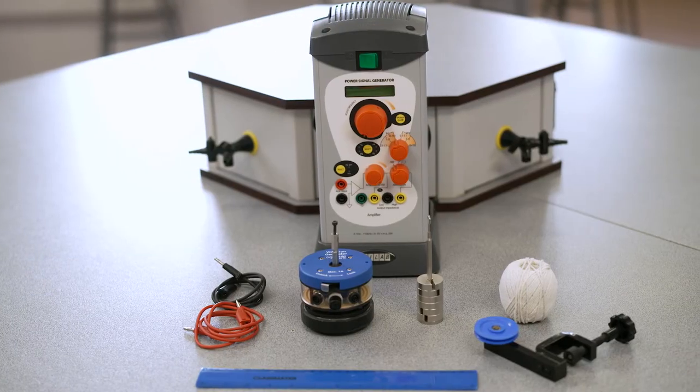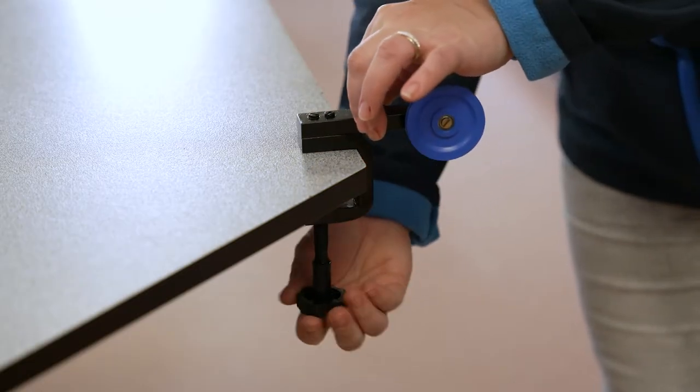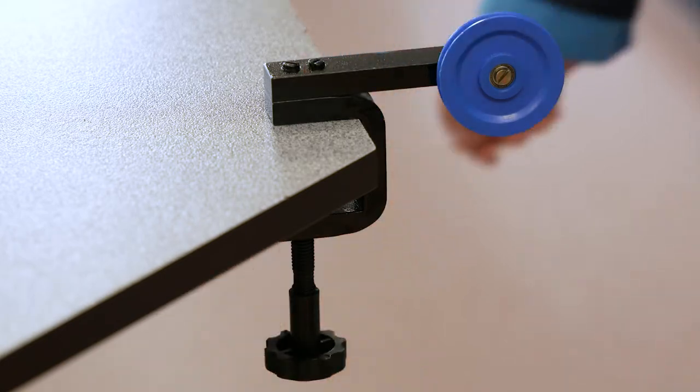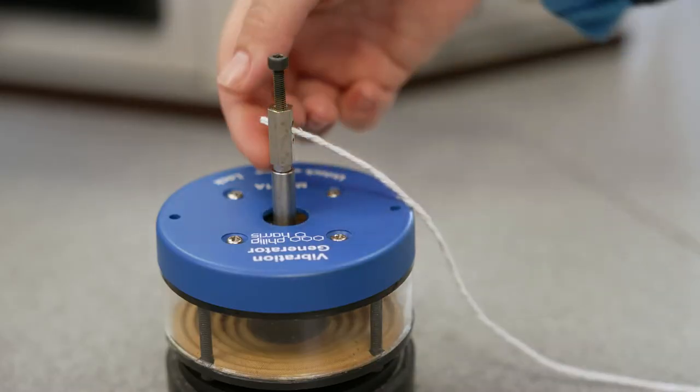Set up the experiment as follows. First mount the table pulley to the edge of a table in line with the vibration generator. Secure the string to the armature of the vibration generator with the armature screw.